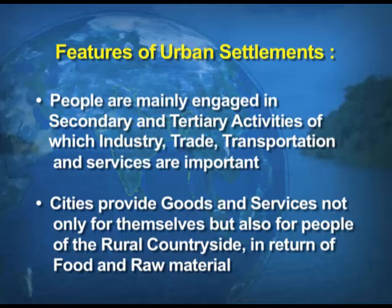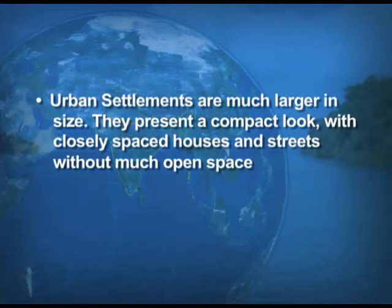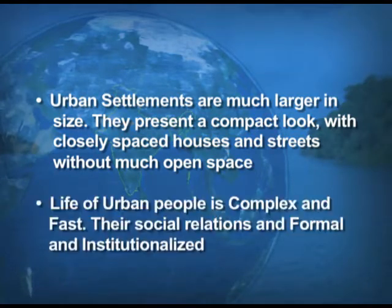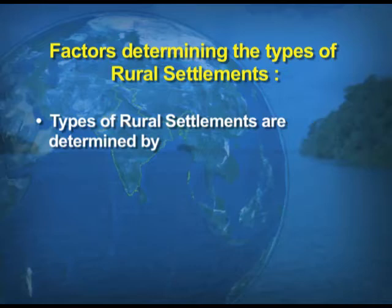Cities provide goods and services not only for themselves but also for people of rural areas, in return for the food and raw materials they receive from rural parts. Urban settlements are much larger in size and present a compact look with closely spaced houses. Life of urban people is very complex and fast, and their social relations are very formal — unlike rural areas where relations are intimate.